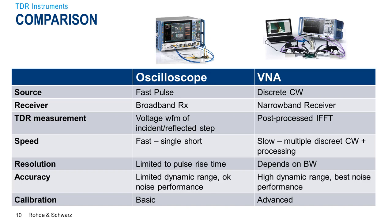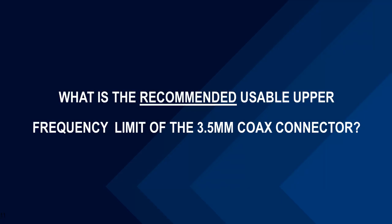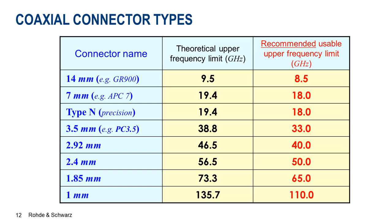Now I'd like to ask a question thinking through the setup, because there are a lot of different RF connectors out there when using different cabling. According to your knowledge, what is the recommended upper frequency limit of the 3.5 mm coaxial connector? Here's a table showing the different theoretical and usable frequency limits for different connector types. For the precision grade 3.5 mm connector, the usable frequency is on the order of 33 GHz. So of course, the smaller the diameter connector type, the higher the frequency range of interest.